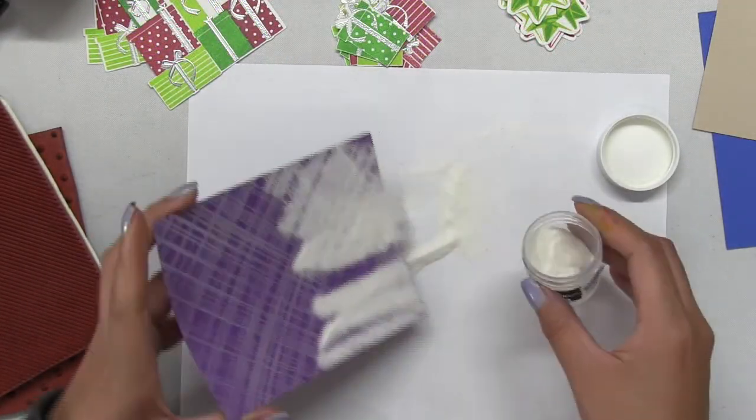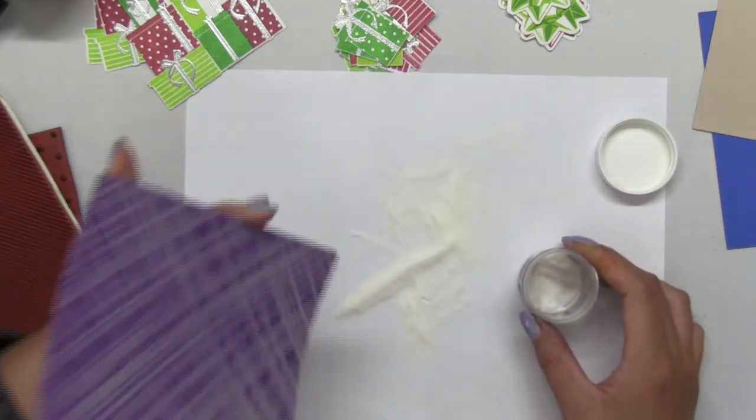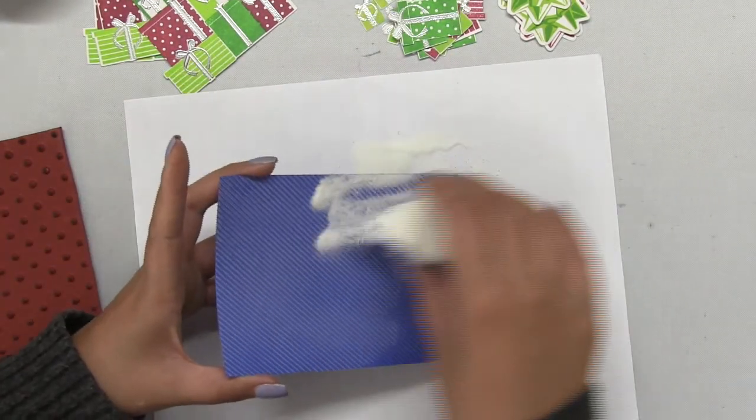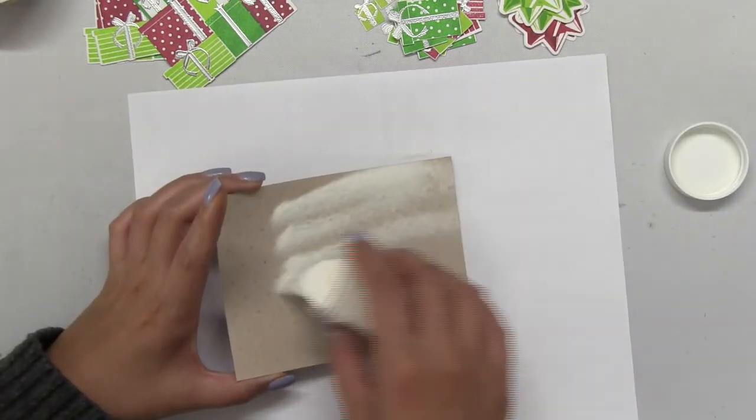Once all three panels were stamped, I poured on some Brutus Monroe icicle clear embossing powder and heated all three panels with my heat tool.